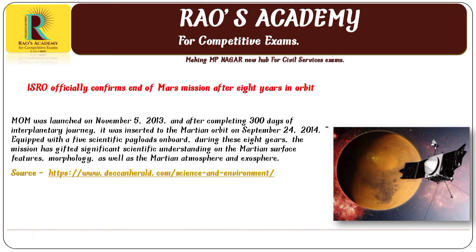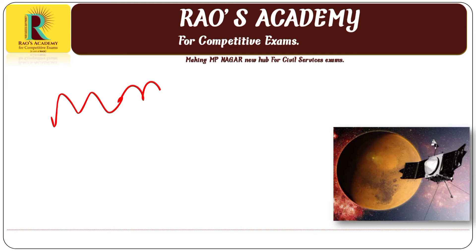In the next news: ISRO officially confirmed the end of India's Mars Orbiter Mission after 8 years in orbit. MOM was launched on November 5, 2013, and after completing 300 days of interplanetary journey, it was inserted into the Martian orbit on September 24, 2014. It was equipped with 5 scientific payloads. During these 8 years, the mission gifted significant scientific understanding of Martian surface features, morphology, as well as the Martian atmosphere and exosphere. This mission made India proud as the first country to reach Mars orbit in the very first attempt.